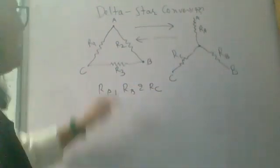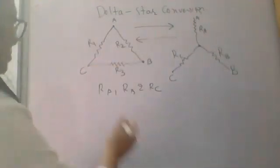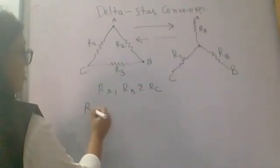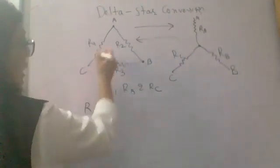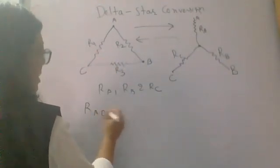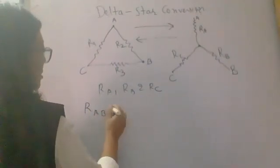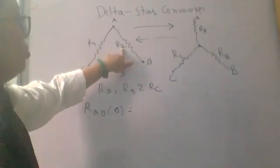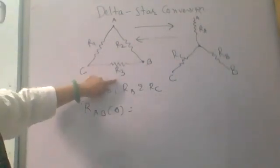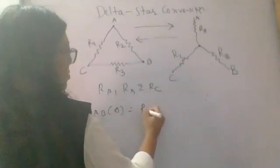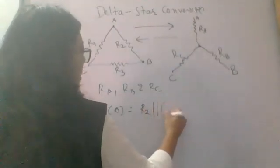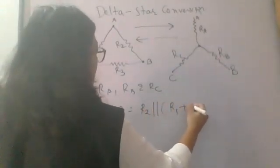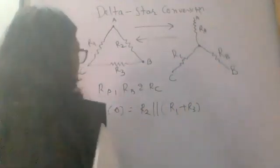First, we take any two points, suppose A and B. The resistance RAB in delta is R2 in series with the parallel combination of R1 and R3. That is R2 parallel (R1 plus R3).